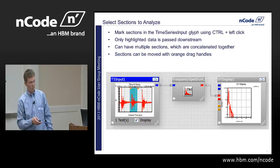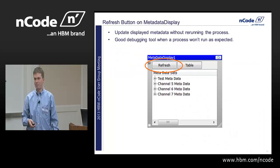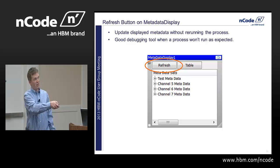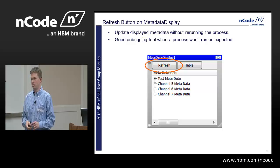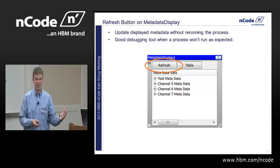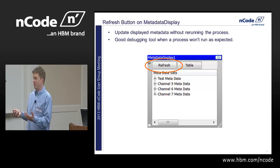When troubleshooting with a metadata display, the refresh button repopulates it without having to rerun the whole process. If you have a process producing errors and want to see what data is in a pipe right now, use Metadata Display Refresh — it's like running the whole process just for that Glyph and it magically gets past errors. For example, if your fatigue calculation doesn't work because your Excel spreadsheet didn't have a material set for channel 89, you can look in the metadata and find out the fatigue material properties you expected aren't actually there.